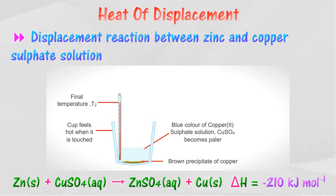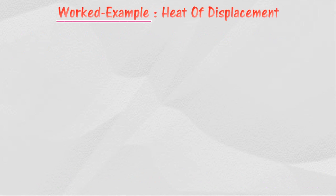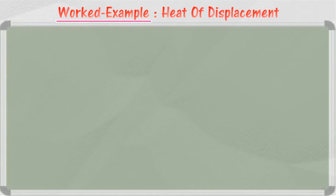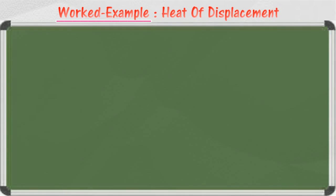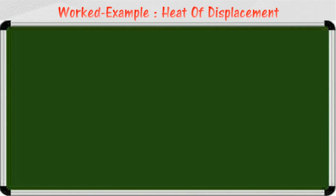Therefore, the heat of displacement of copper by zinc is negative 210 kilojoules per mole. Here are the steps in calculating the heat of displacement. Worked example: heat of displacement of copper from copper(II) sulfate solution by zinc. 25 cubic centimetres of 0.2 molar copper(II) chloride is poured into a polystyrene cup and the initial temperature of the solution is recorded.